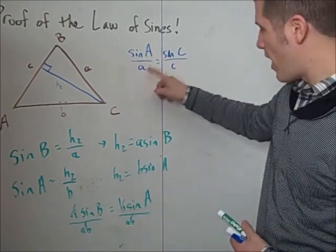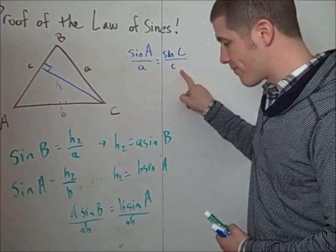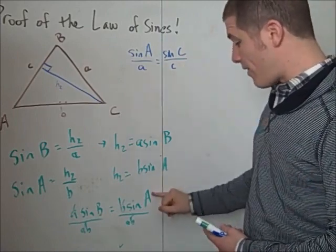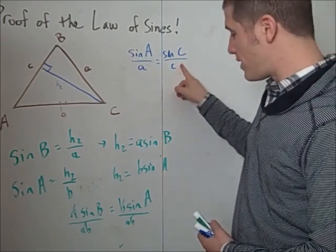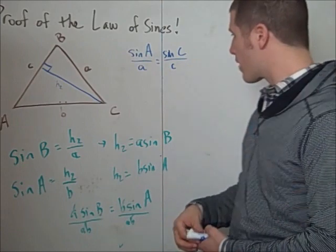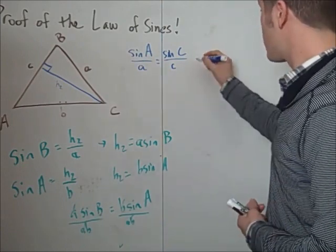But I already know the sine of A over a is the sine of C over c, which tells me since the sine of A over a is equal to the sine of C over c and also equal to the sine of B over b, I have concluded the proof.